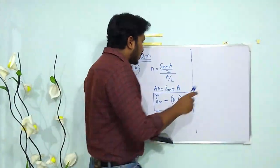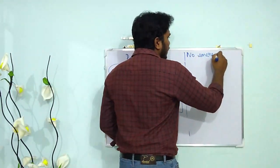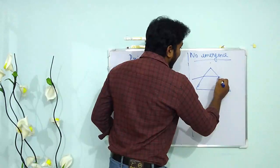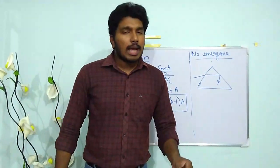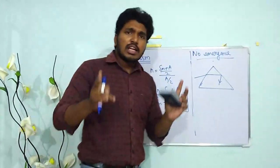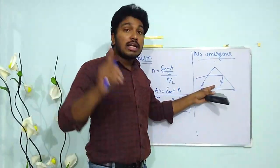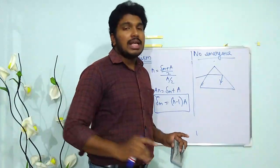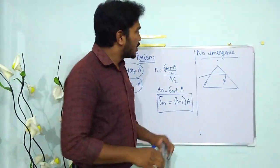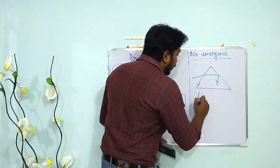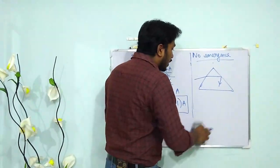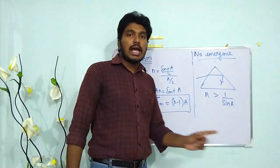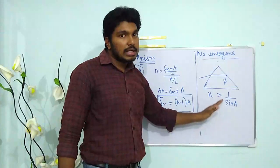One more condition to learn is no emergence. No emergence means that once a ray is incident at the second refracting surface, it gets totally internally reflected back into the same medium — total internal reflection has taken place. The condition for no emergence is that the refractive index n must be greater than 1/sin A.